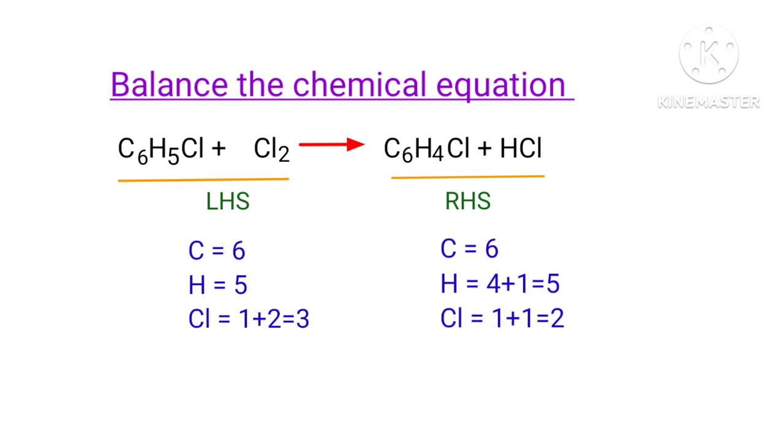In this equation, the left hand side has 6 carbon atoms, 5 hydrogen atoms, and 3 chlorine atoms present. And the right hand side has 6 carbon atoms, 5 hydrogen atoms, and 2 chlorine atoms present.